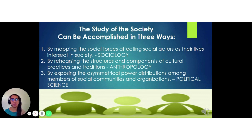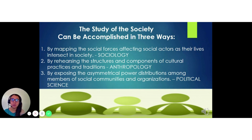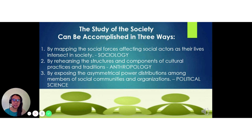The last discipline is political science, which zeroes in on power relations and focuses on how these power relations produce layered modalities of opportunities among social actors. These three disciplines — sociology, anthropology, and political science — are mutually exclusive but actually complementary, allowing us to learn about social dynamics from different points of view.